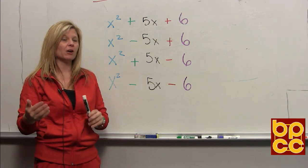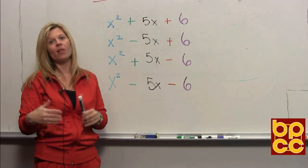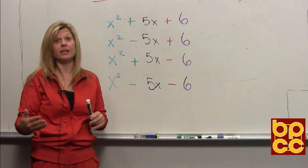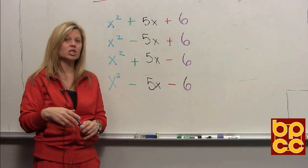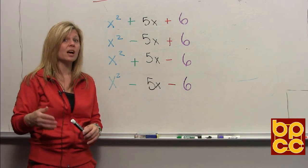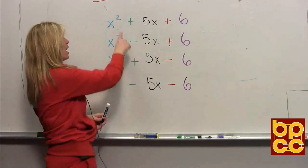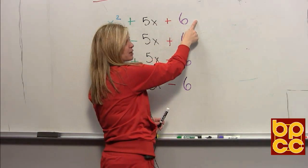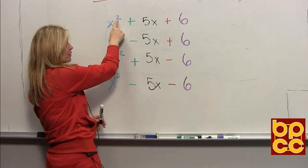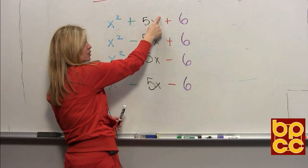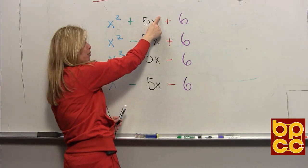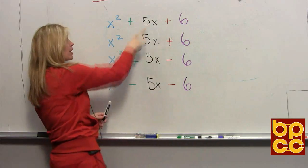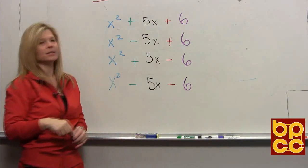The first thing you have to understand is in order to factor a trinomial, it must be written in the correct descending order. Descending order goes from the highest exponent to the lowest exponent. So we have x squared (exponent 2), x to the first (exponent 1), and technically x to the 0. So this trinomial is in descending order.